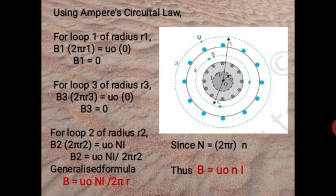Let the magnetic field along loop 1 be B1. Then according to Ampere's circuital law, for the length l = 2πr1, we have B1(2πr1) = μ0(0). Since current enclosed in the loop is 0, therefore B1 = 0. Hence, the magnetic field at any point P in the open space inside the toroid is 0.